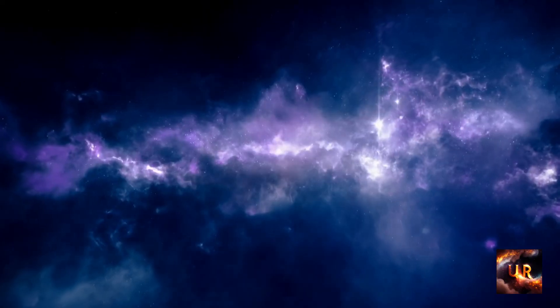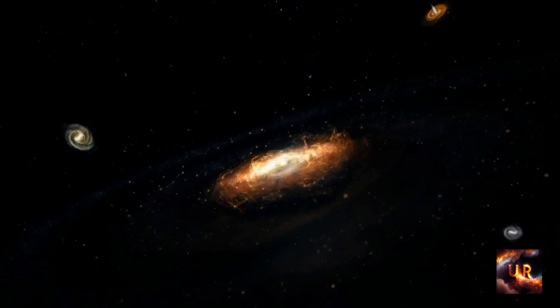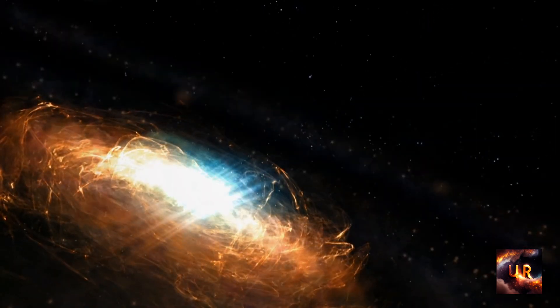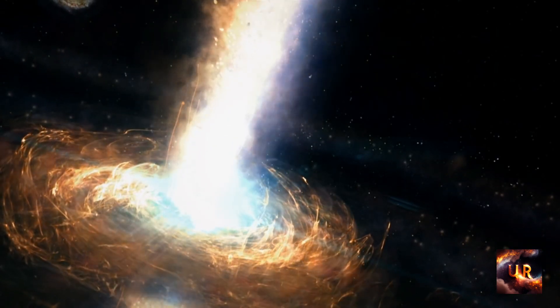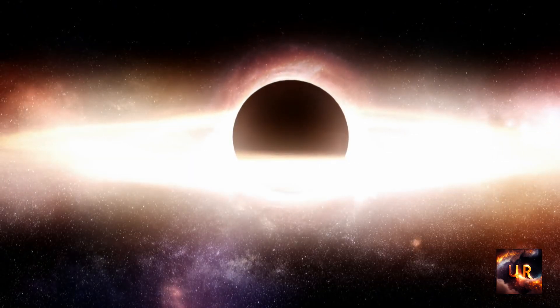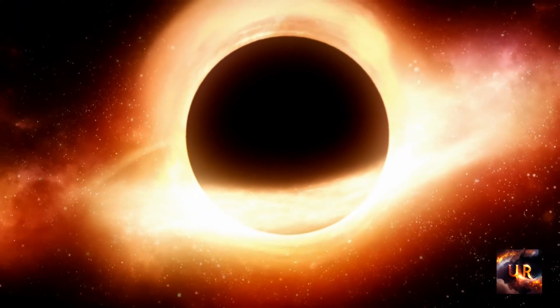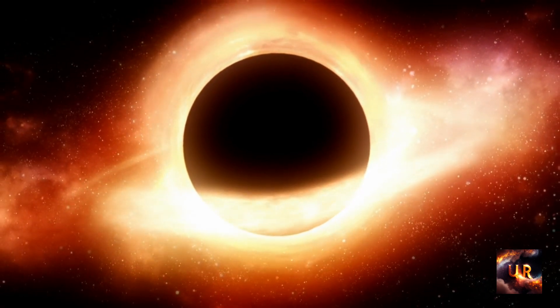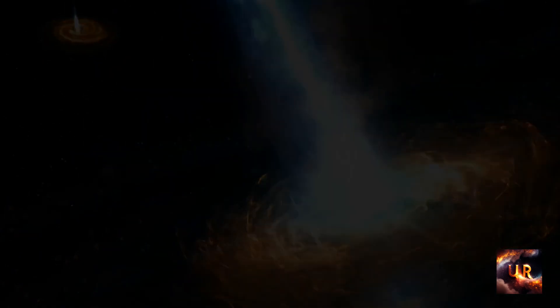One interesting aspect of V616 Monocerotis is that it is part of a binary system, meaning that it is orbited by a companion star. The black hole and the star are separated by a distance of about 10 million miles, which is relatively close in astronomical terms. The close proximity of the two objects means that the black hole is constantly pulling matter from the companion star, creating an accretion disk of hot, glowing gas around it. This process also releases a huge amount of energy in the form of X-rays, which is how the black hole was initially detected.